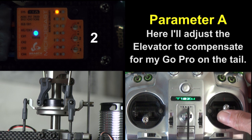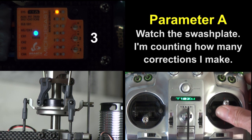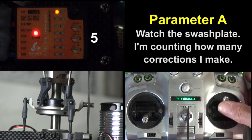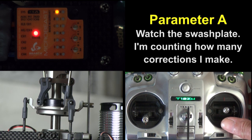Always use short moves on the cyclic you want to adjust and always count how many moves you make. You can cancel and start over by moving the rudder stick.